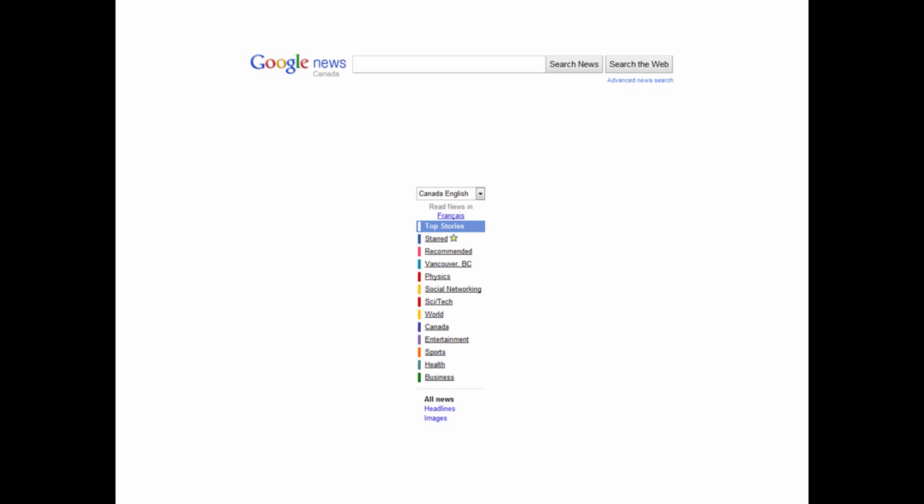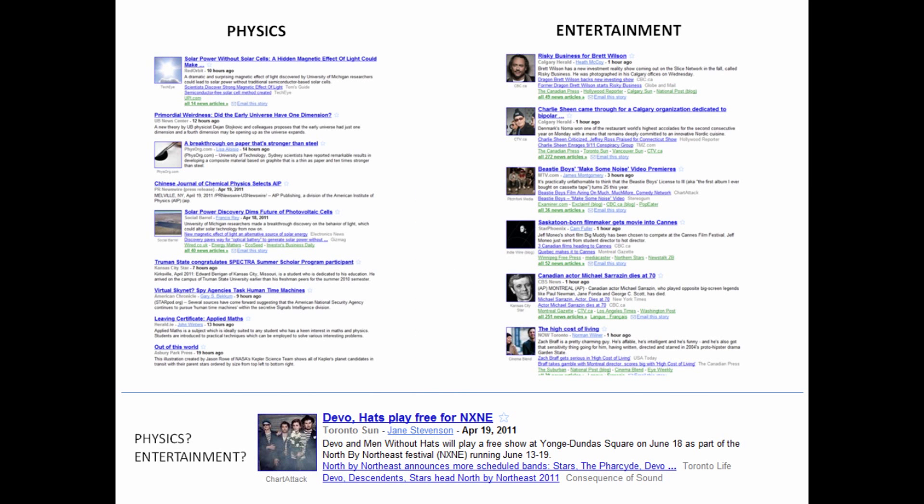Many important problems in the real world can be formalized as a classification task. Here's an example of a test classification problem that Google has to deal with. What Google does is that it crawls around the web looking for news articles to include them later in Google News. Now, once they find something that looks like an article, they have to automatically infer many things about the article based on its text.